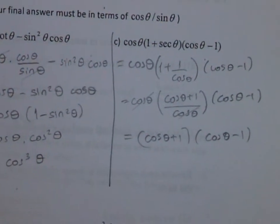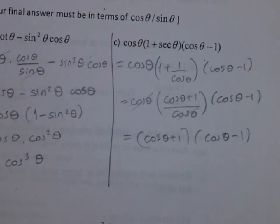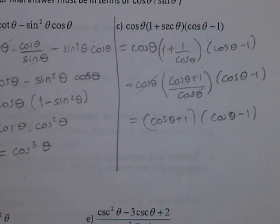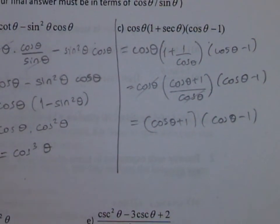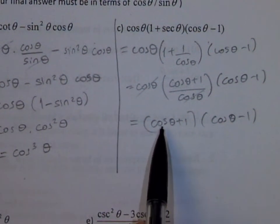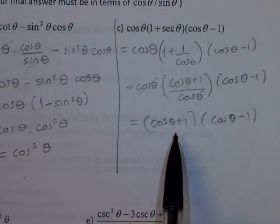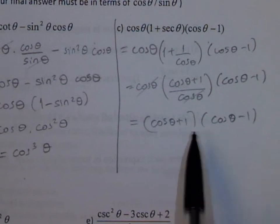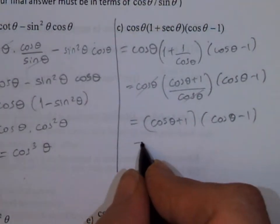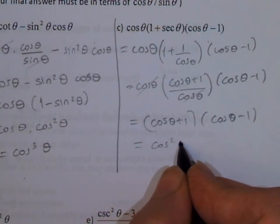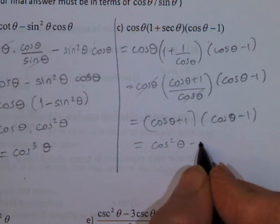We've written everything in terms of sine and cosine but we can simplify further. Notice cosine theta plus 1 times cosine theta minus 1 — that's a difference of squares — so this equals cosine squared theta minus 1.